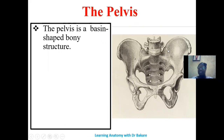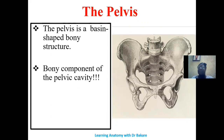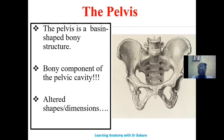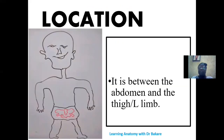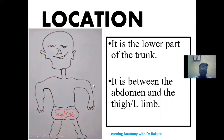The pelvis is a bony structure that looks like a bowl. It is a basin-shaped structure seen in the pelvic region. There can be alterations in the shapes and dimensions of the pelvis, but there is a basic general configuration, and that is what this lecture will unfold. The bony pelvis is the bony configuration of the pelvic cavity, located in the lower part of the trunk, between the abdomen and the lower limb.